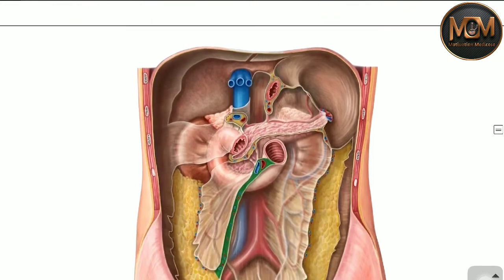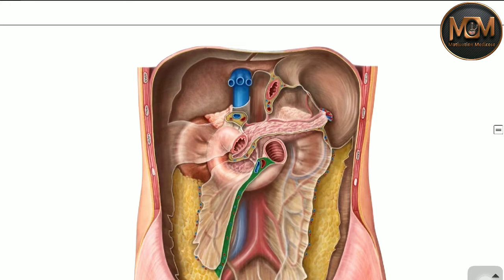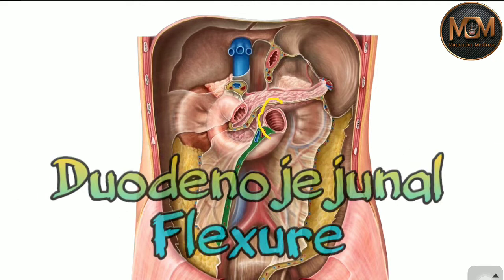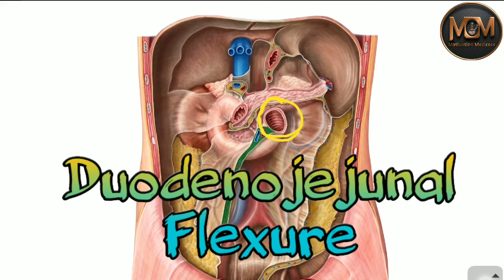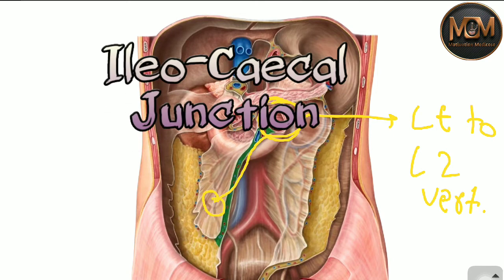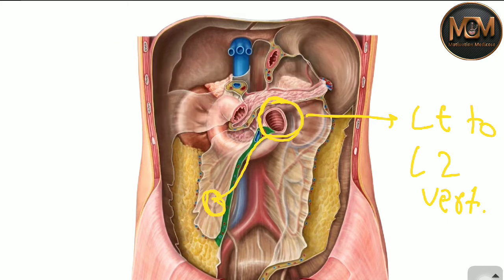To understand the root of mesentery, we should know a little bit about it. The root of mesentery is basically an oblique line which starts from the duodenojejunal flexure at the left of L2 vertebra, and it is an oblique line that goes till the ileocecal junction, which is to the right of the sacroiliac joint.